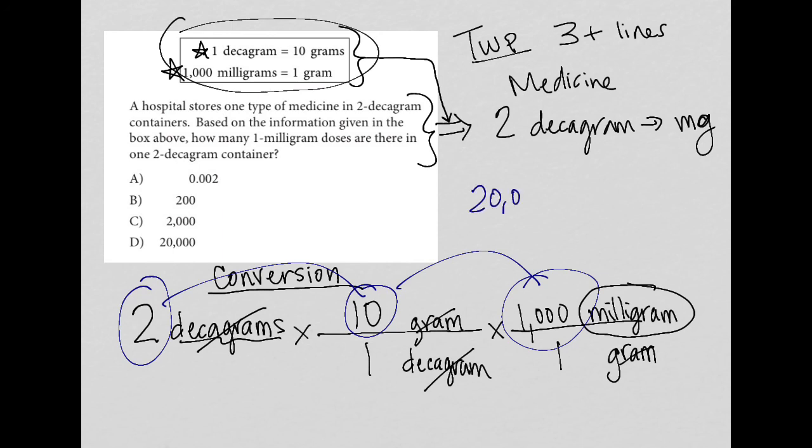So what I end up with is 20,000 milligrams. That's my unit that's here. And the answer, therefore, is choice D.